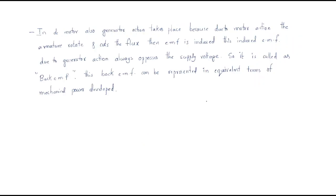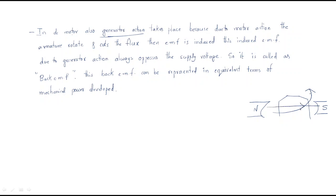The most important thing in a DC motor is that generator action also takes place. In a DC motor with North and South poles, the motor is rotating. There is a conductor and flux present. When the conductor is in rotation, an EMF is automatically generated — this is called the back EMF.